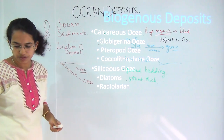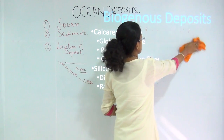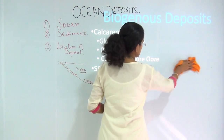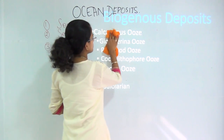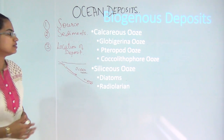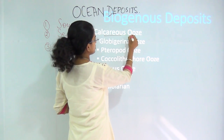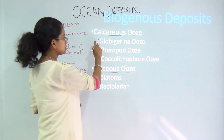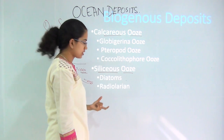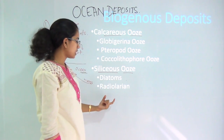The next deposit we will be talking about today is biogenous deposits. Biogenous deposits, as previously mentioned, are formed from microorganisms, planktons, or oozes. When we talk about biogenous deposits, we classify them into two basic types: calcareous deposits and siliceous deposits — so you have the siliceous ooze and the calcareous ooze. Calcareous ooze is classified as globigerina, pteropods, and coccolithophores, while siliceous ooze is classified under diatoms and radiolarians.